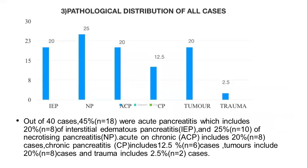Pathological distribution of all cases. Out of 40 cases, 45% were acute pancreatitis, which includes 20% interstitial edematous pancreatitis and 25% necrotizing pancreatitis cases. Acute on chronic pancreatitis and chronic pancreatitis include 12.5% cases, tumors include 20%, and trauma includes 2.5% cases.